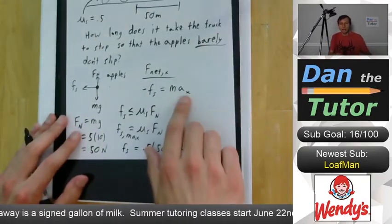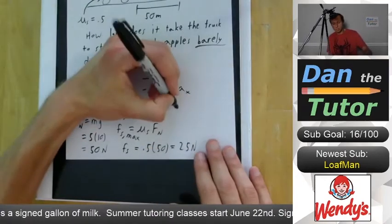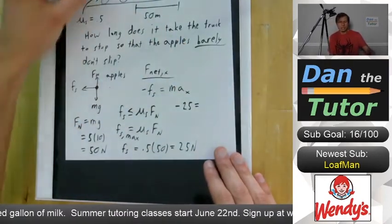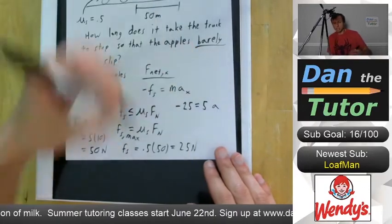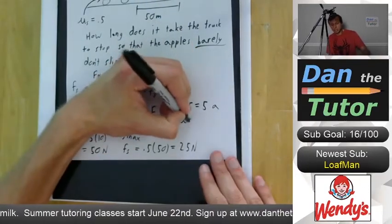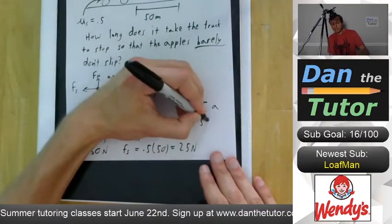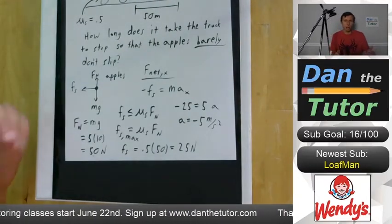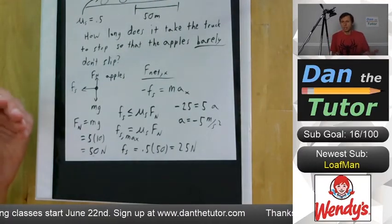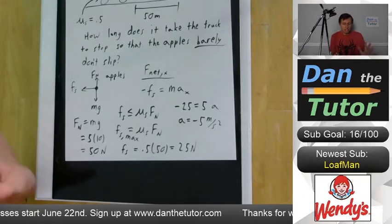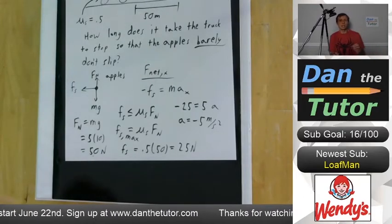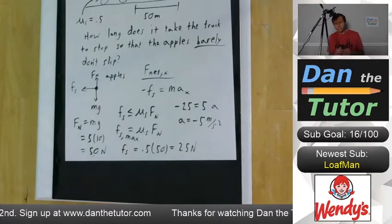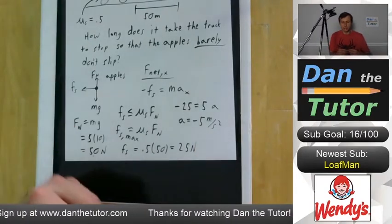We can plug back in and solve for acceleration. Negative 25 equals mass (5) times acceleration. The acceleration is negative 5 m/s². The negative is significant — it means the acceleration points to the left, because the truck is slowing down.